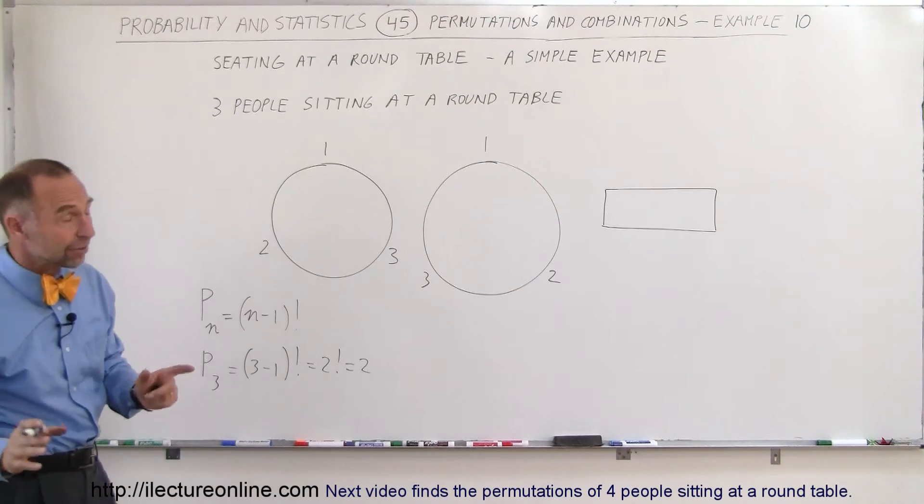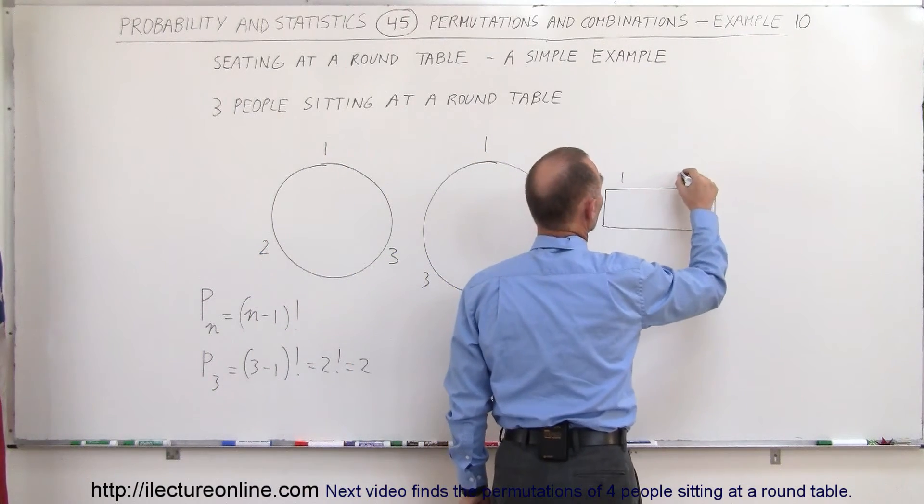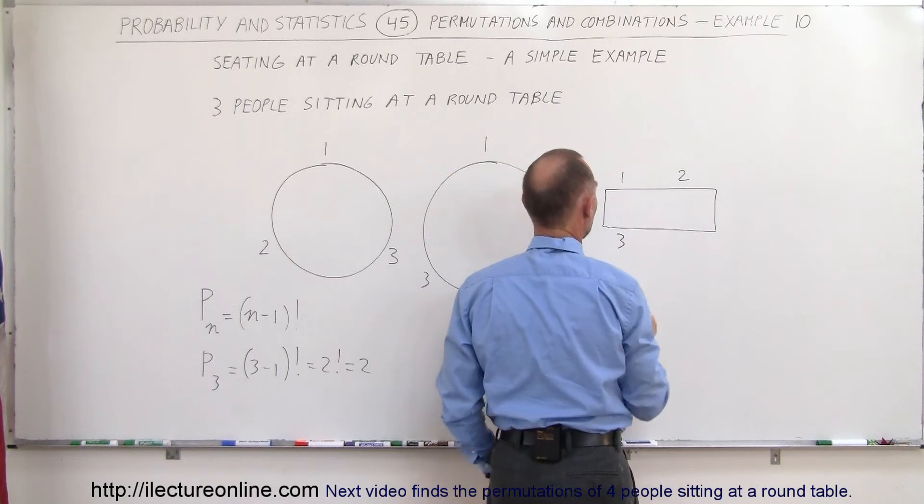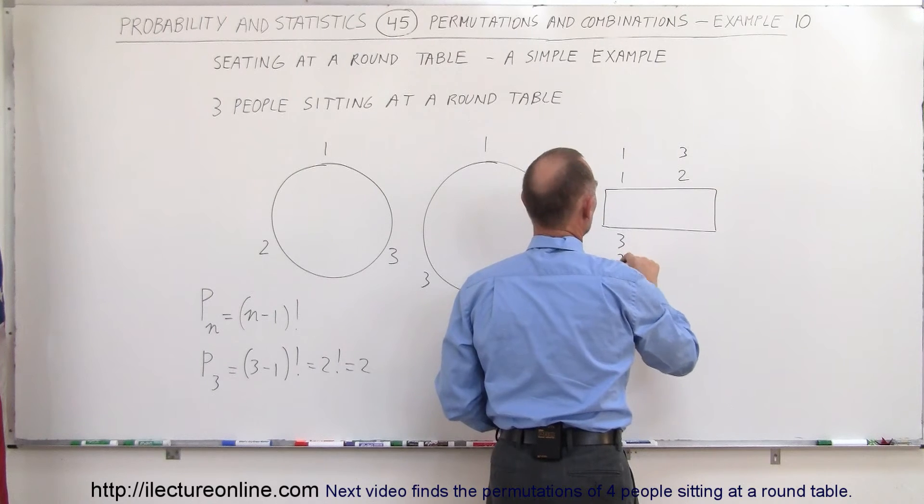In the case of the rectangular table, that's not the case, because the first person could sit there, the second person could sit there, the third person, and then we can have the first person sitting there, 3 and 2,